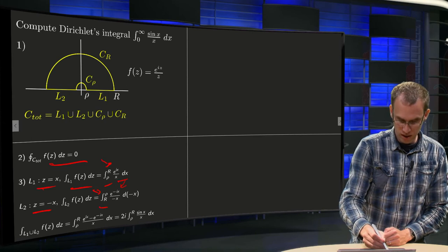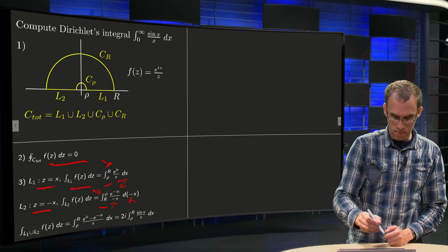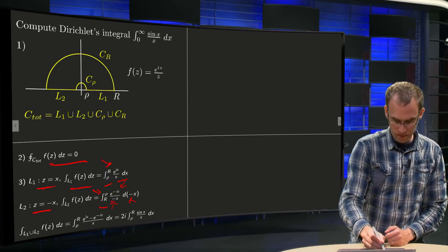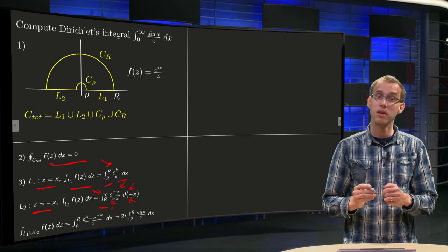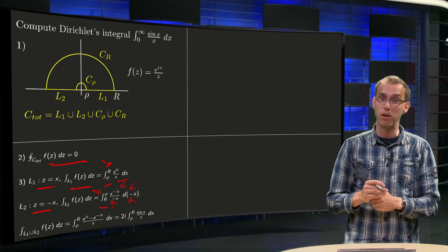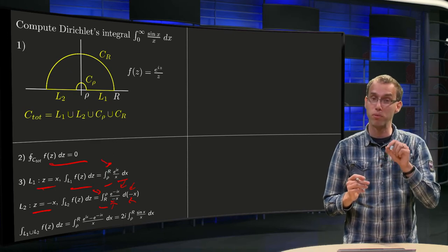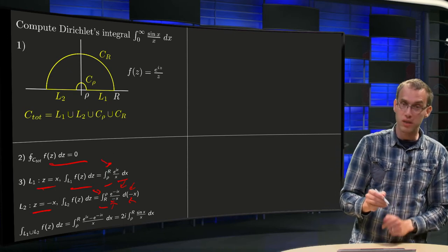From R to rho, and then you plug in everywhere z equals minus x, so you get e to the power minus ix, and here minus x, d minus x. So you see that minuses here and there are going to cancel out. You get an additional minus sign if you invert the order of the boundaries, so if you go from rho to R instead of from R to rho.